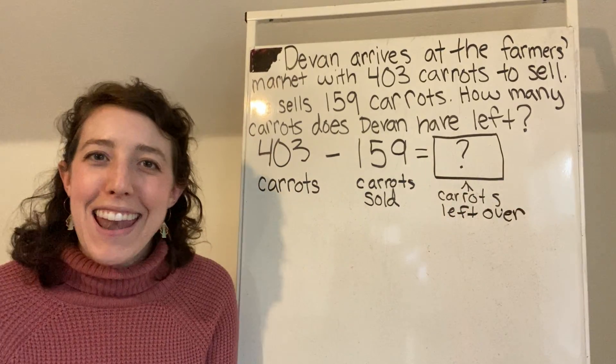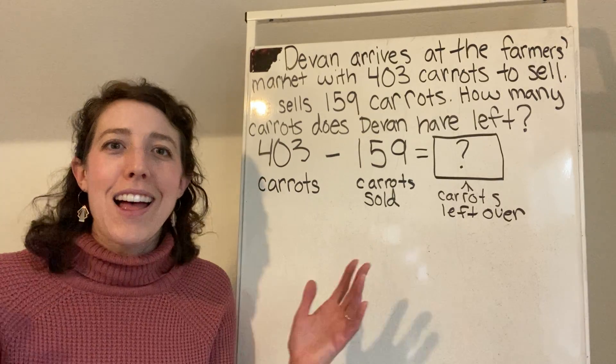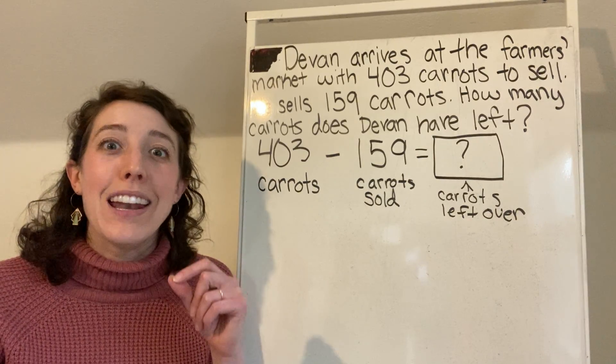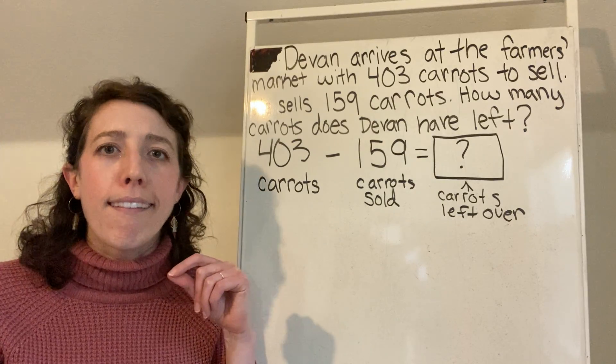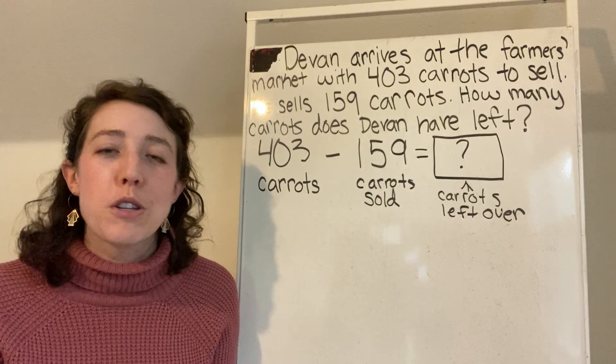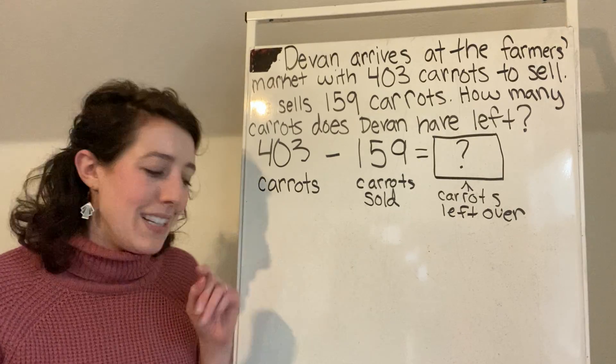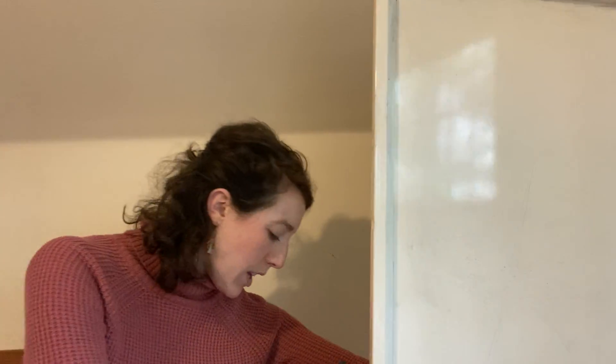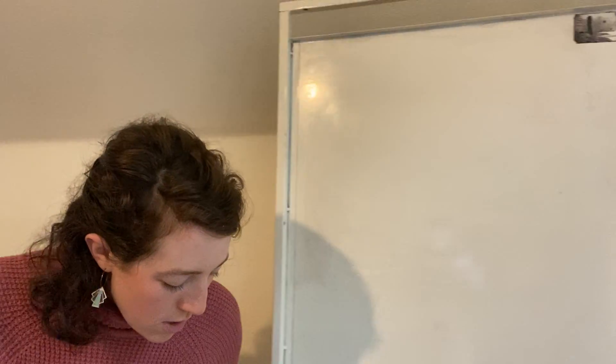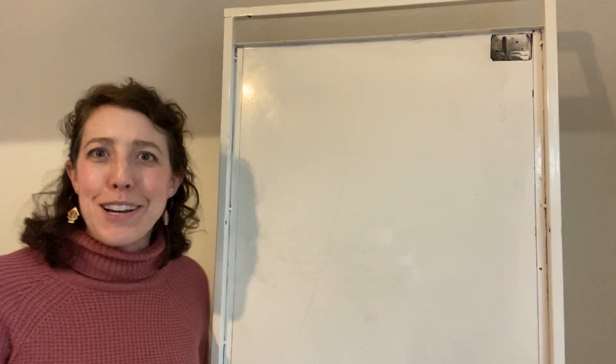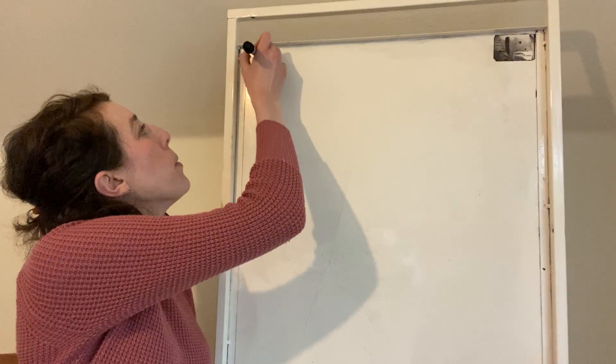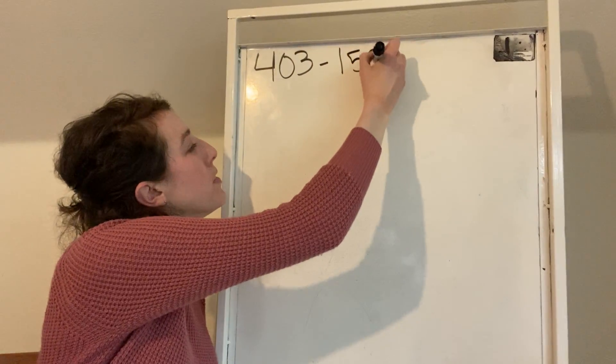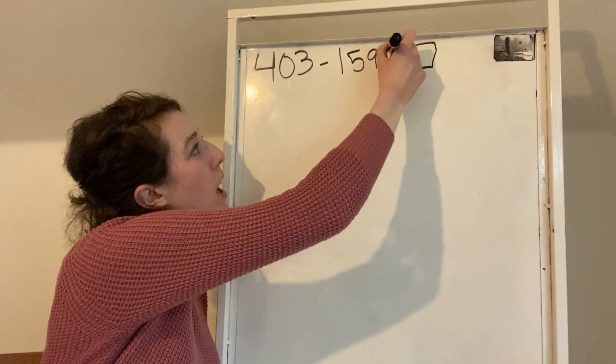Alrighty. Now that we have our math equation, let's look at a strategy that we could use. But I noticed that Ms. Brown said could use because there are lots of different strategies that you could use to solve this. But we're just going to be looking at one today. So I want to make sure that we have plenty of room because I'm actually going to rewrite just our math equation on the other side so that we have plenty of room to solve this problem. So I'm going to rewrite my problem. I have 403 minus 159 equals blank.